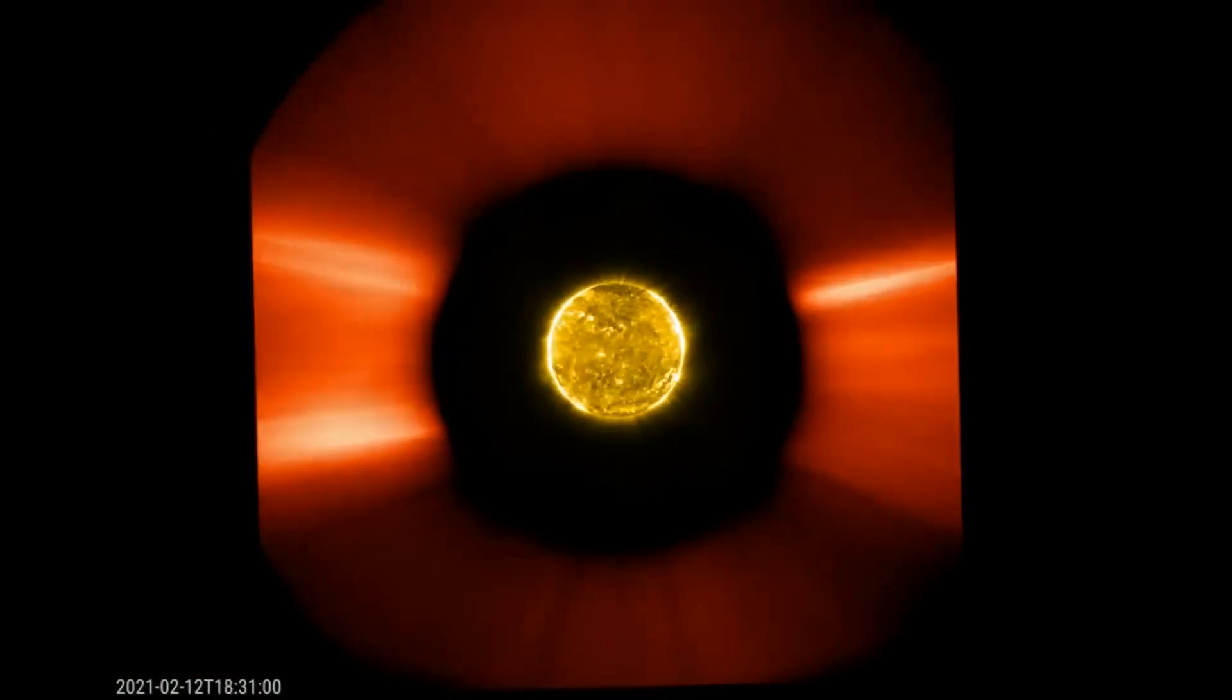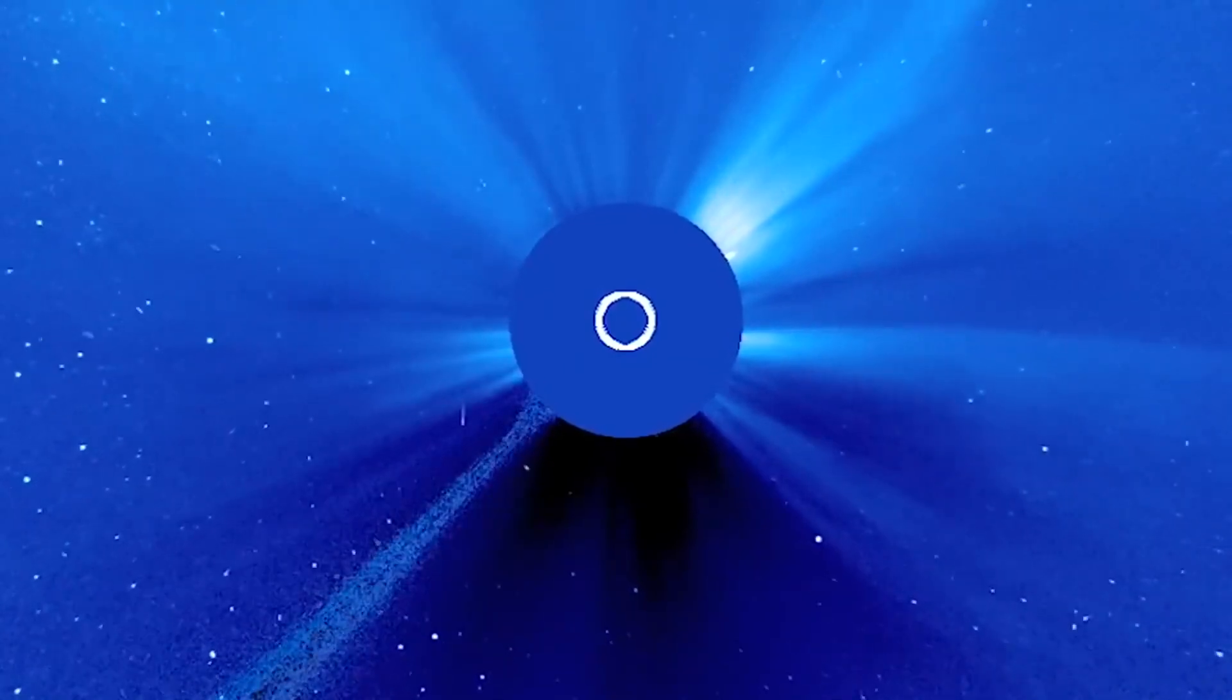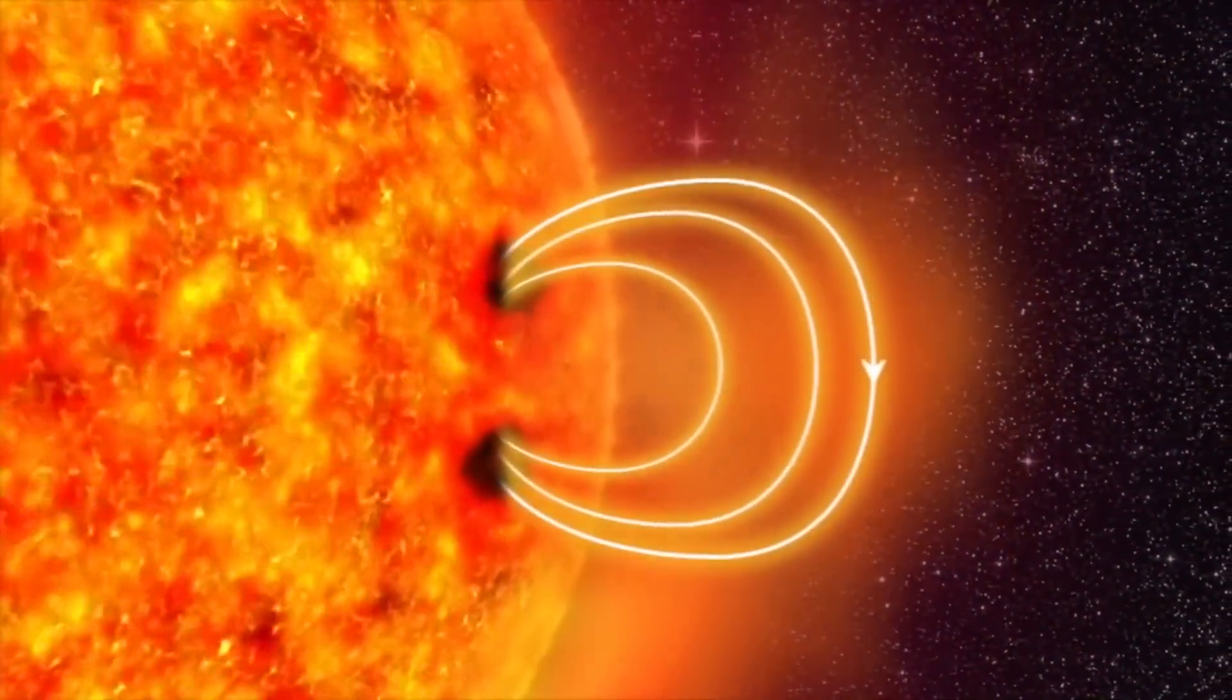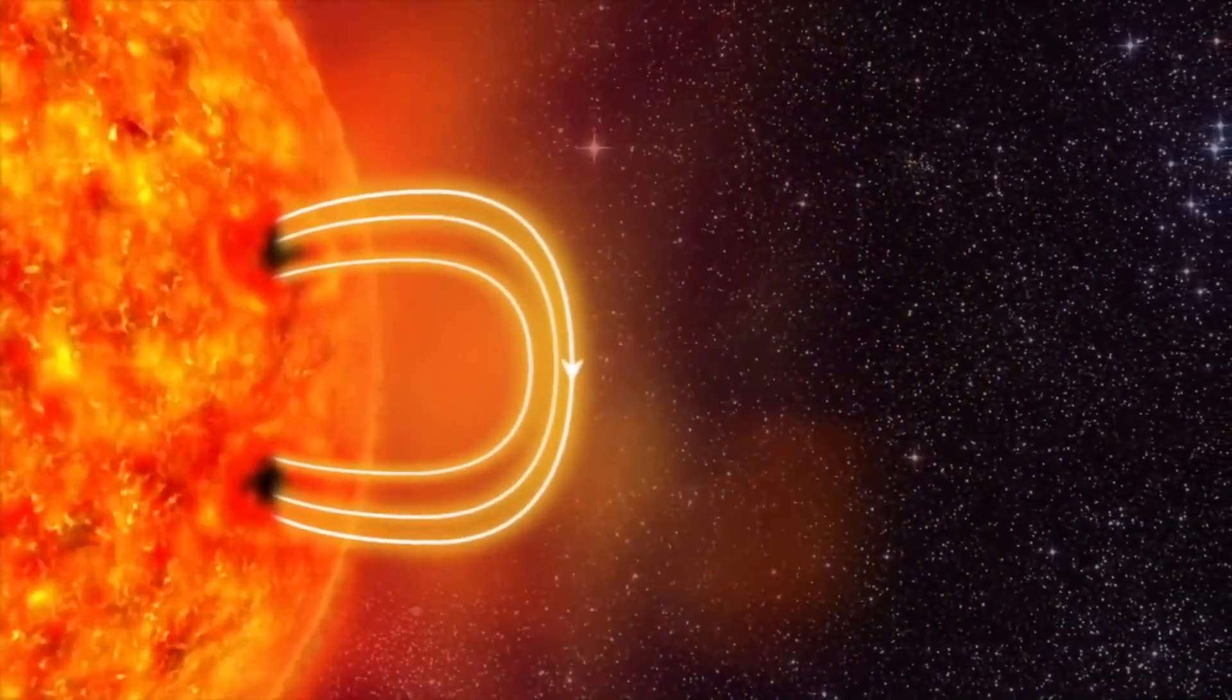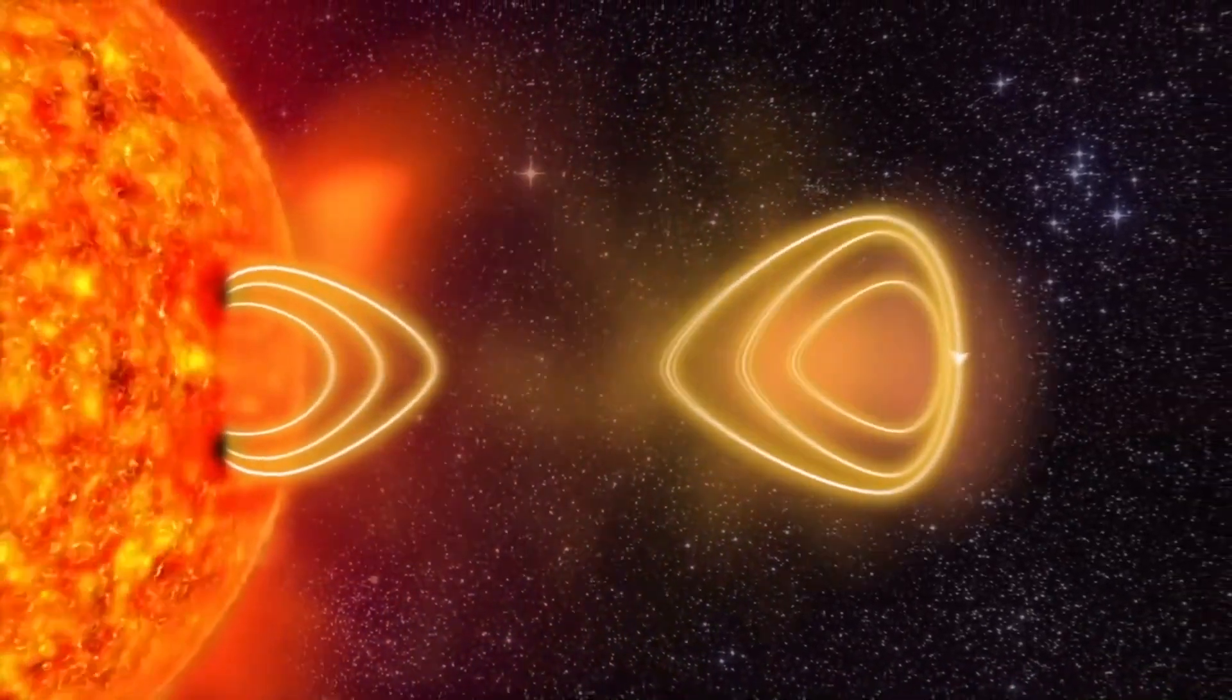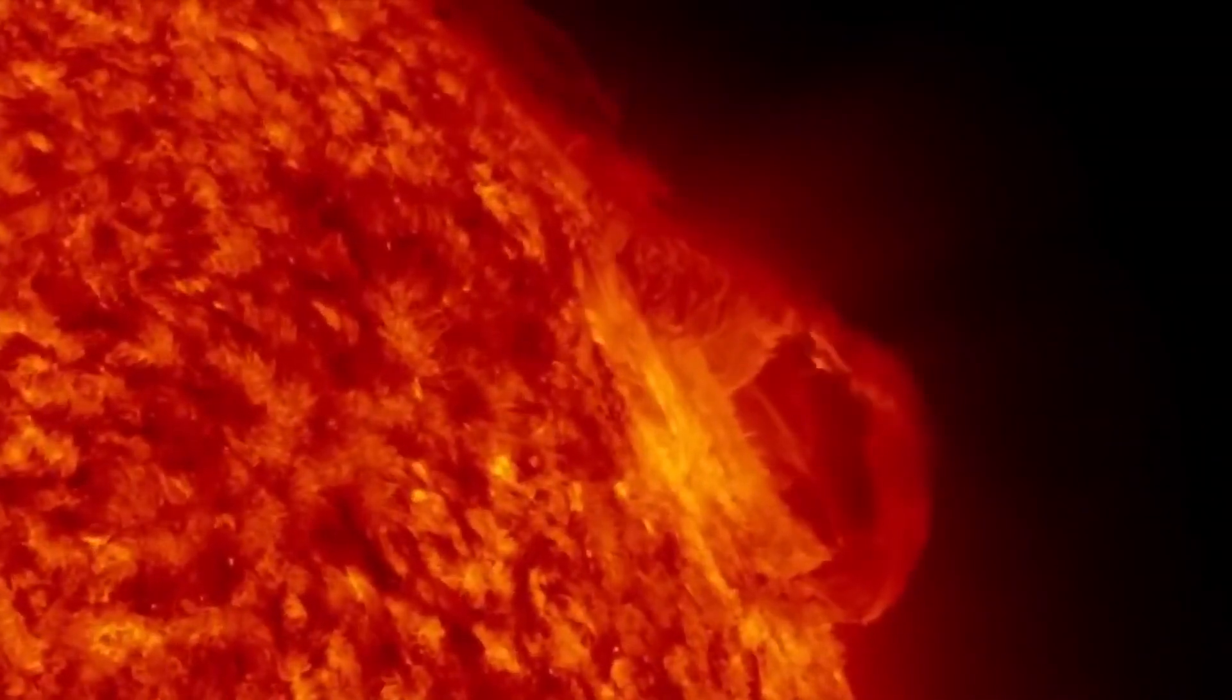Moreover, this is the first device that is able to observe coronal mass ejections, CMEs, at such close range from the Sun. Besides that, the probe managed to film its space journey. Here we are, observing the craft pass through the solar corona as it passes by several CMEs, plasma eruptions, and the Sun's magnetic field. It's amazing how close it is to the Sun.